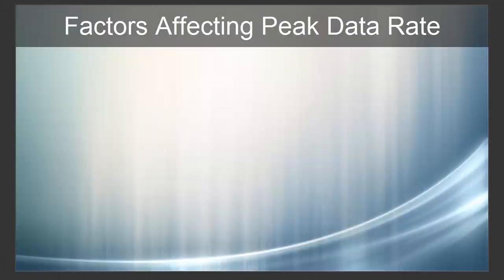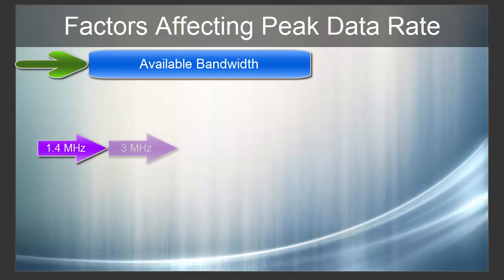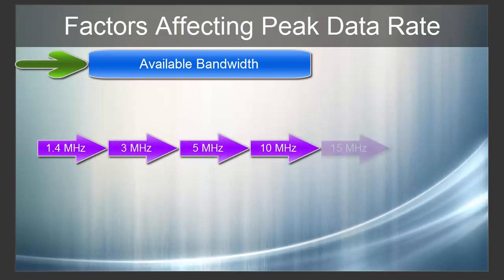Let's talk about factors that affect peak data rate in LTE. The very first such factor is available bandwidth. We know LTE supports flexible bandwidth — that is, 1.4 MHz, 3 MHz, 5 MHz, 10 MHz, 15 MHz, and 20 MHz.